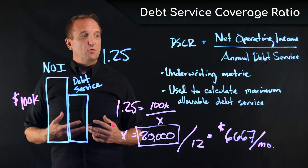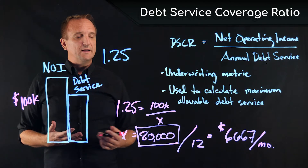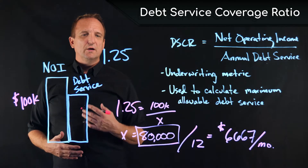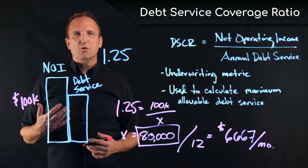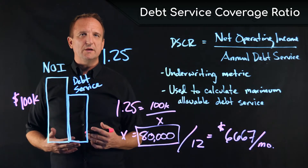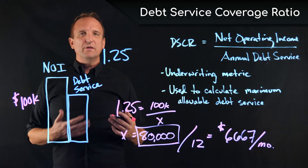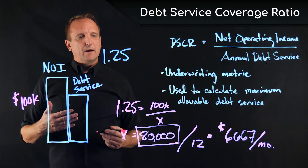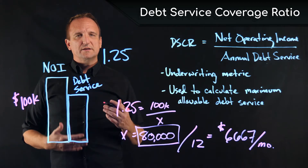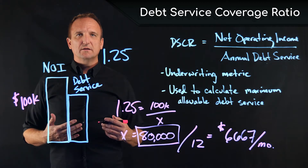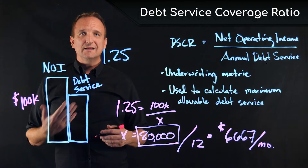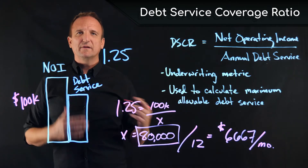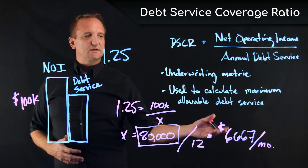Understanding this — if the debt service coverage ratio dictates what our maximum loan payment can be, then one thing we need to recognize is that our debt service amount allowed by the lender is capped at $6,667.